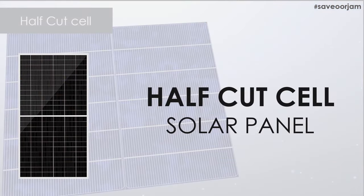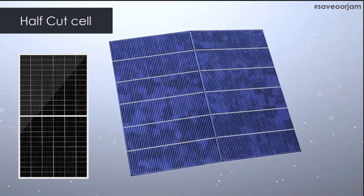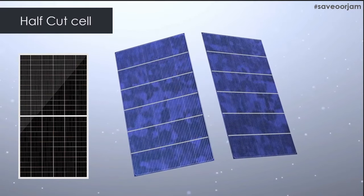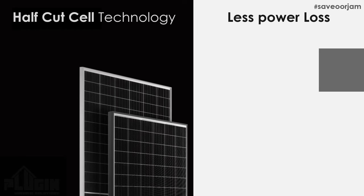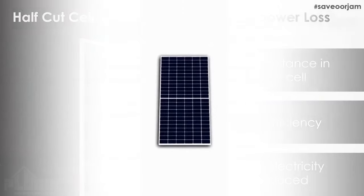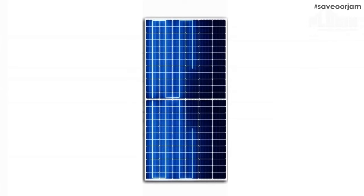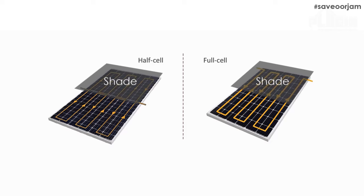This is the half-cut solar panel. The solar panels are made of half-cut solar cells. One of the most important aspects is the two sets of wiring, which affects shading and output.